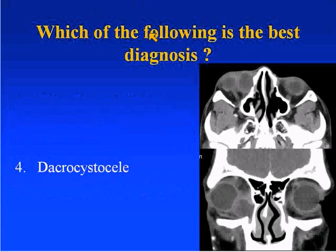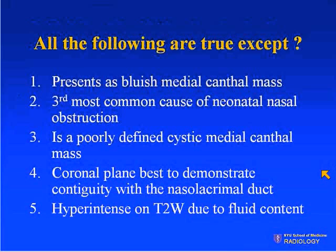If you look at the axial image, we can see this cystic lesion right along the medial canthal region. What's really key is this coronal image. All of the following are true except: number one, presents as bluish medial canthal mass; number two, third most common cause of neonatal nasal obstruction; number three, a poorly defined cystic medial canthal mass; number four, coronal plane best to demonstrate contiguity with the nasal lacrimal duct; and number five, hyperintense on T2-weighted images due to fluid content.